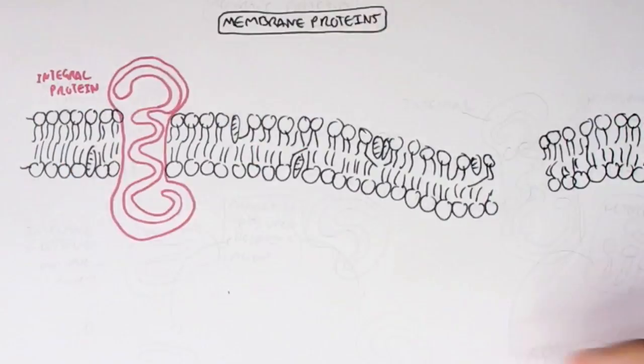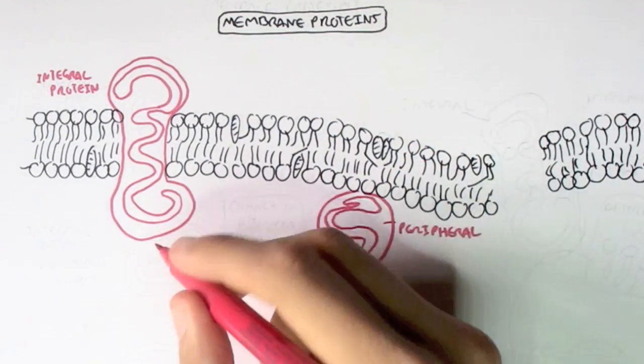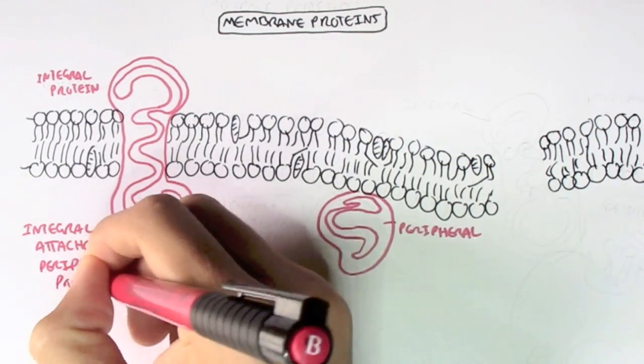So here we have an integral protein and here we have a peripheral protein which faces the cytosol, the inside of the cell. And peripheral proteins, as we mentioned in the first video, can also bind to integral proteins.